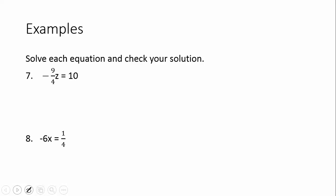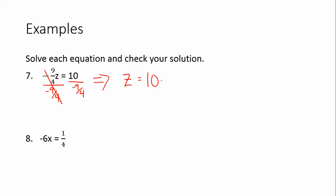Number 7 is a little different — it's multiplication. Z is being multiplied by negative 9 over 4, so we need to divide both sides by negative 9 over 4. Remember, dividing by a fraction is the same as multiplying by the reciprocal. On the left-hand side, we get z. On the right-hand side, we have 10 times negative 4 over 9. I had to flip the fraction in order to multiply. 10 and 9 don't cancel; 4 and 1 don't cancel. We have a positive times a negative, so the answer is negative 40 over 9.